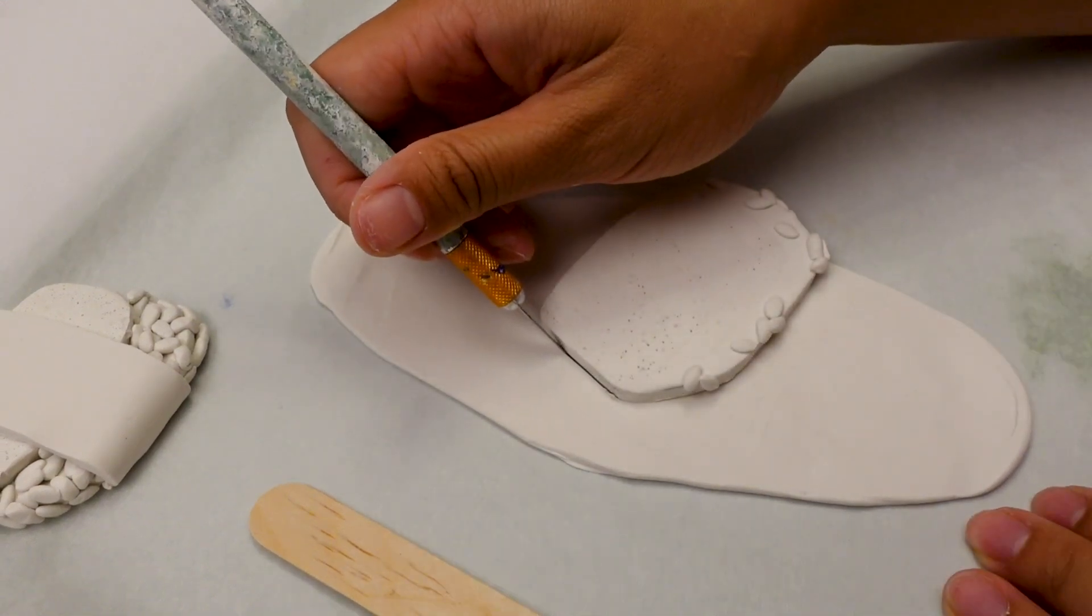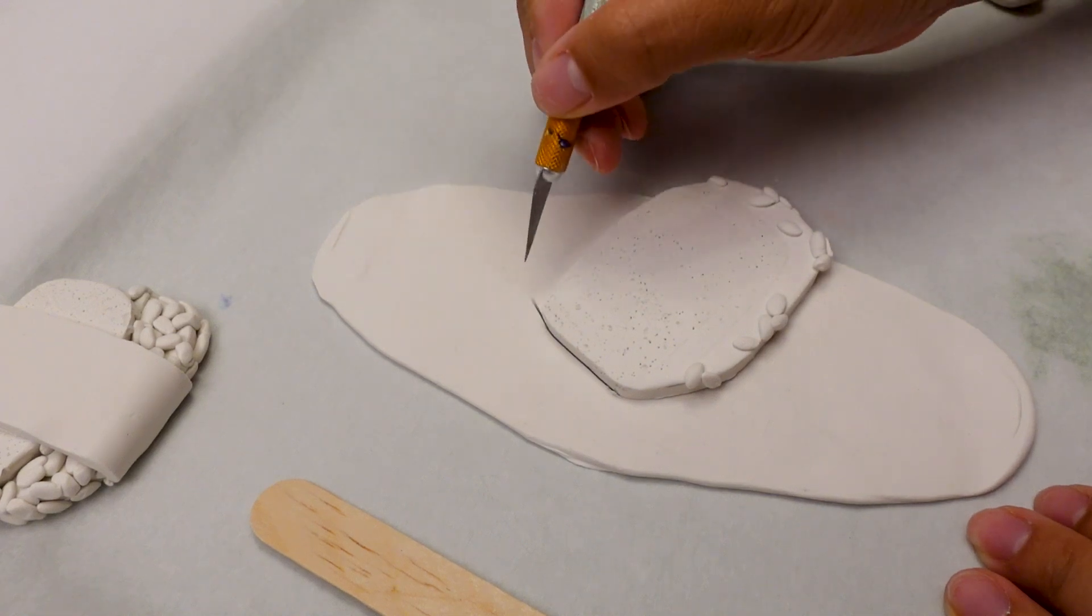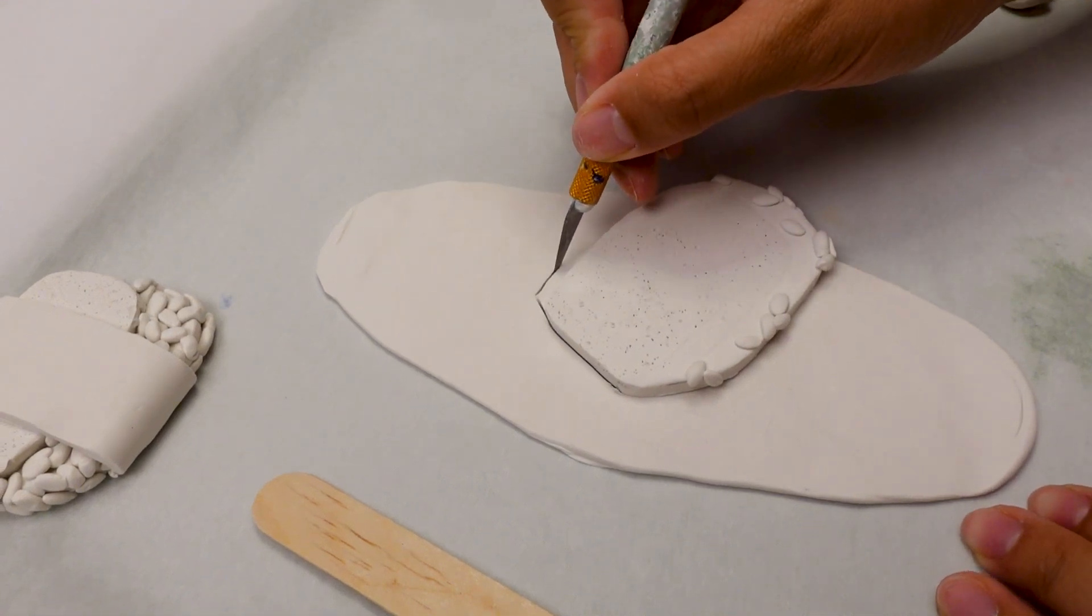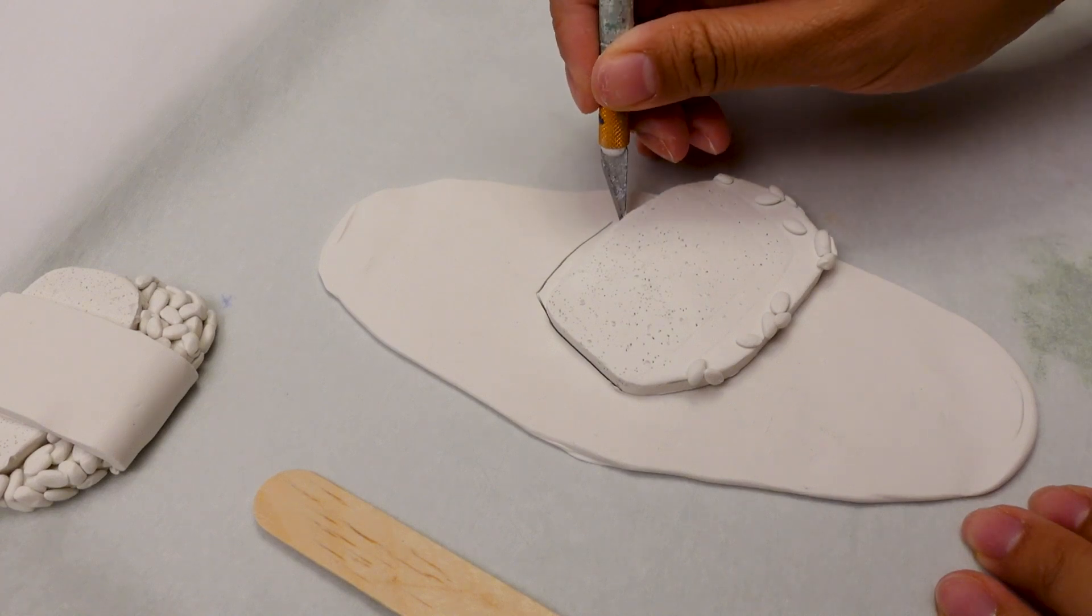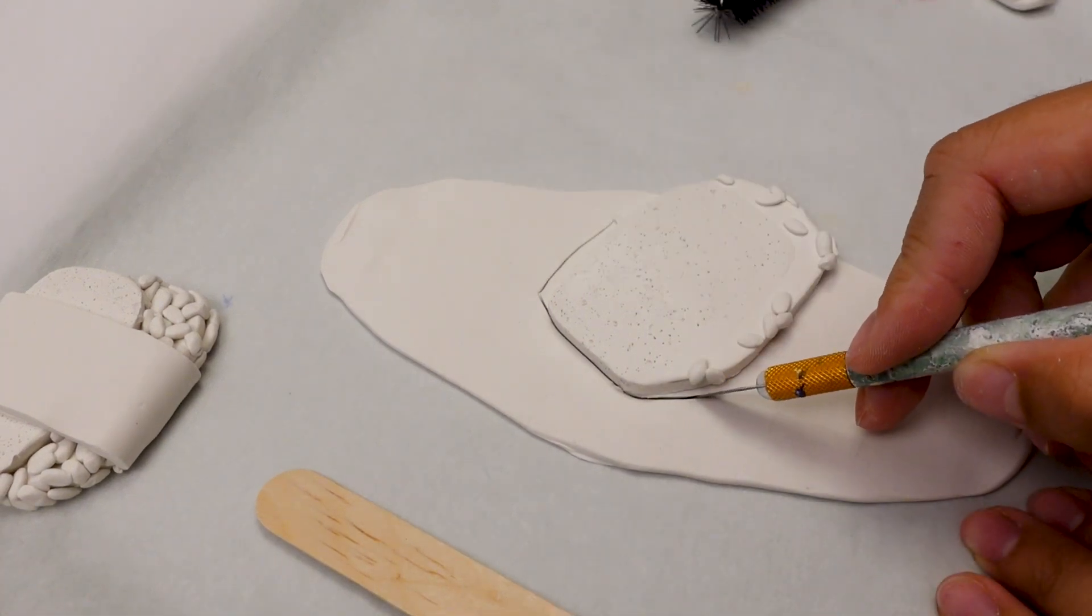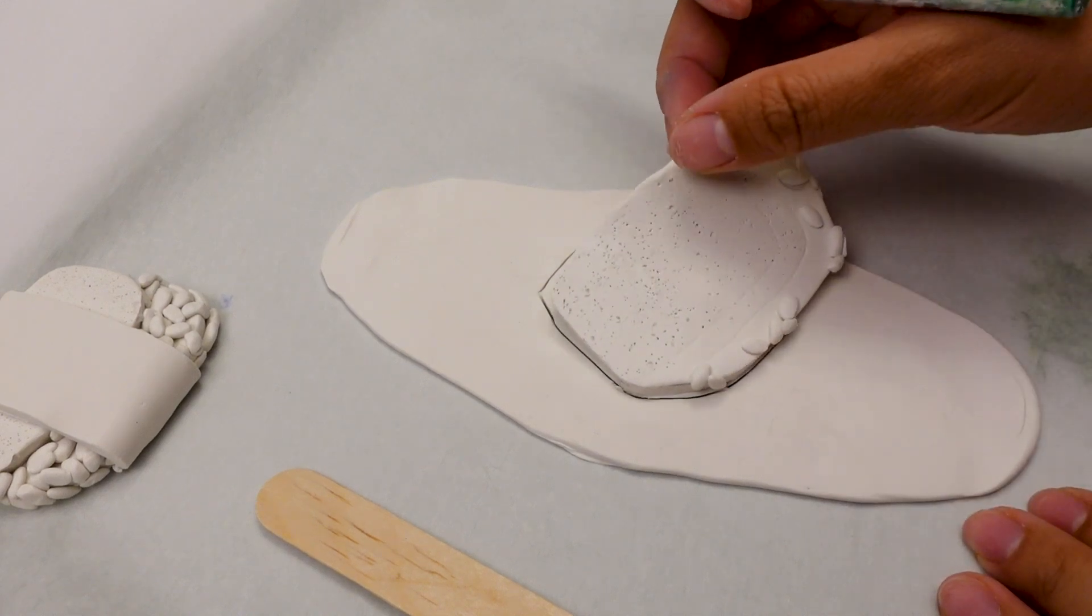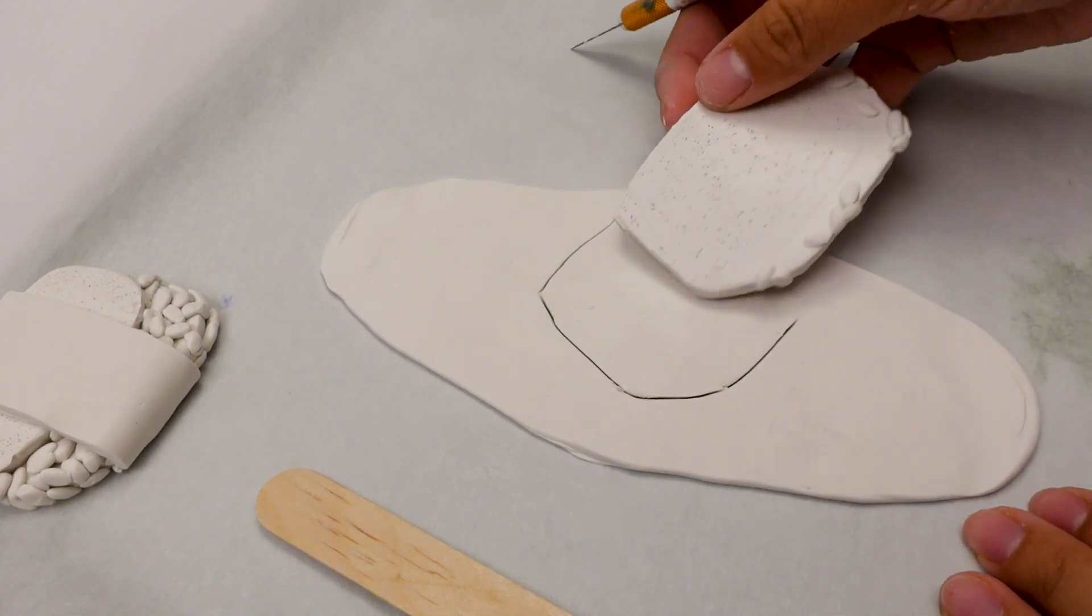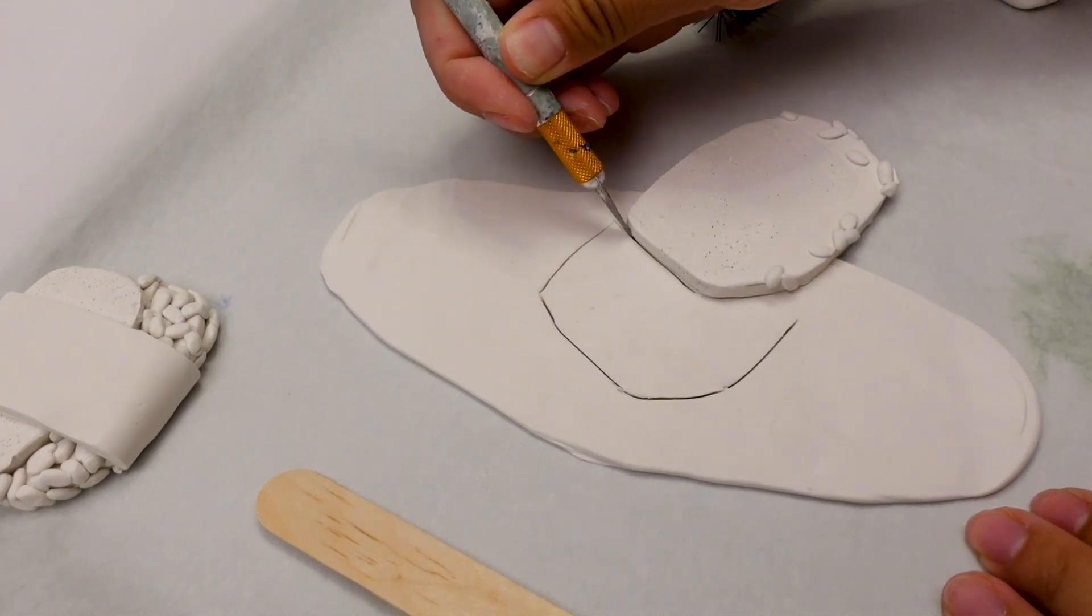So this time, I did it by placing the musubi that I already created and I kind of just traced around it, if that makes sense. And I got the angle, the exact angle, and I formed a new nori sheet from it. And I just depended on the contours of the existing clay piece that I just made.